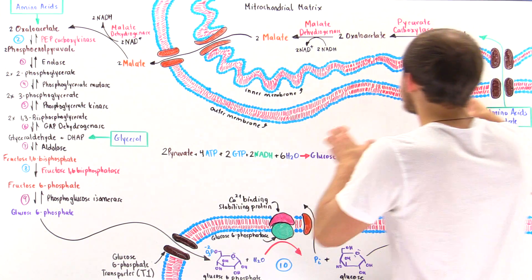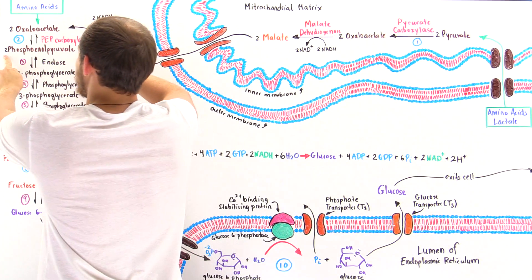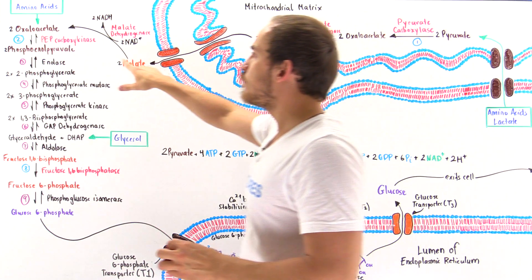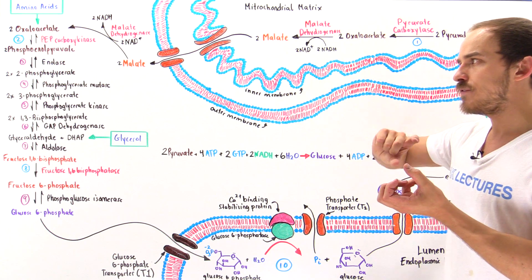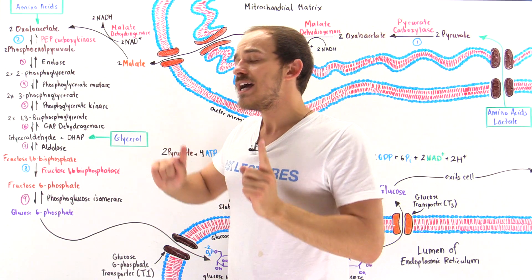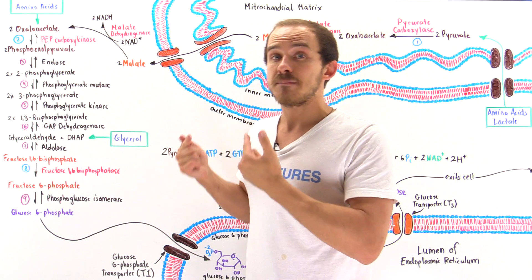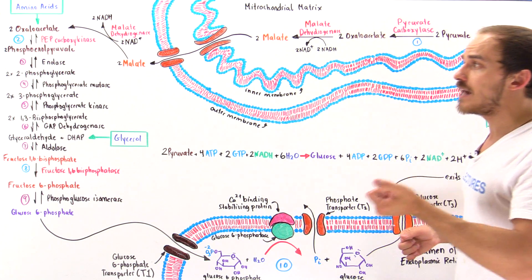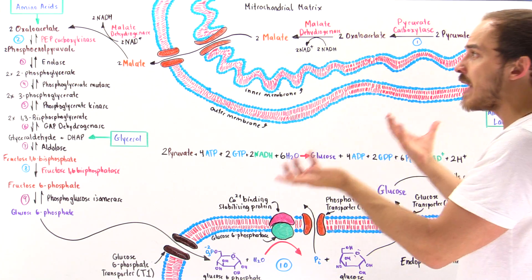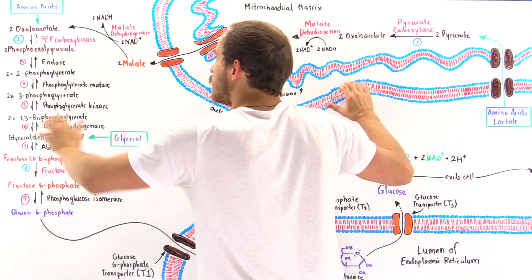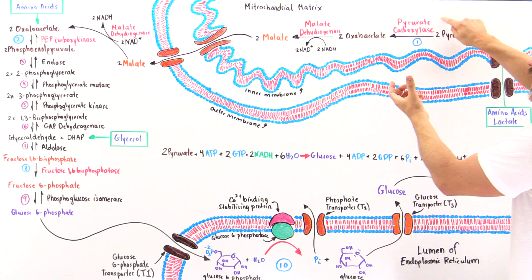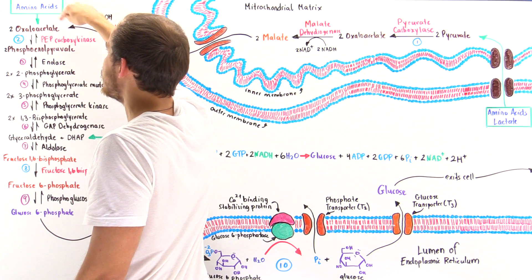Steps one and two basically transform pyruvate into phosphoenolpyruvate. We know that in step 10 of glycolysis, we form pyruvate from phosphoenolpyruvate. So the question is: why can't we just use the reverse process from glycolysis? Because that reverse process would be very endergonic. To bypass that endergonic process, we create a completely different reaction pathway that is favorable, driving the unfavorable process by using the hydrolysis of ATP and decarboxylation.